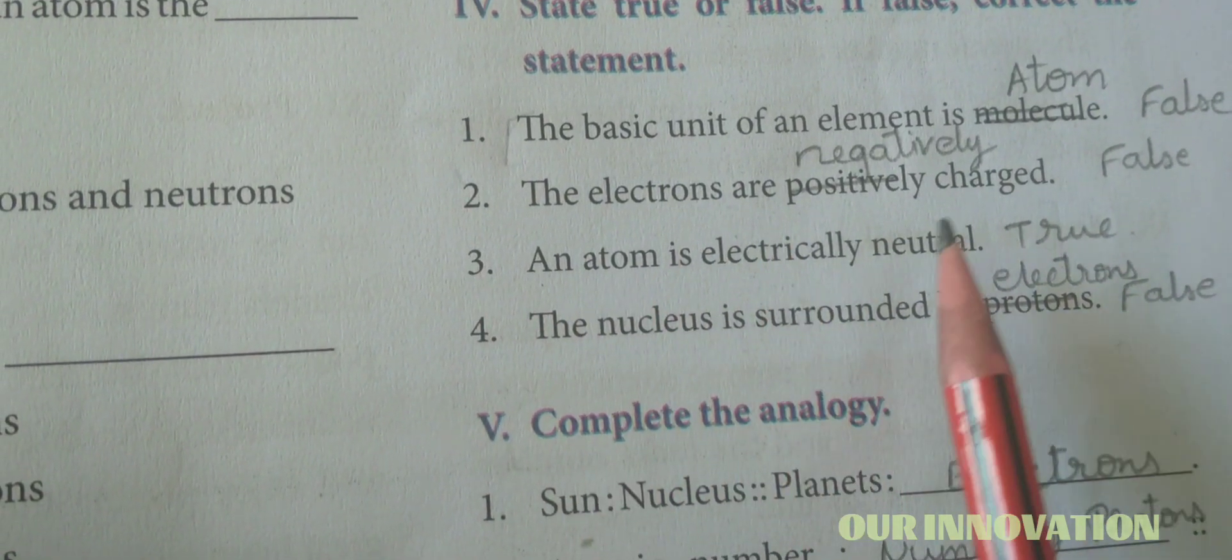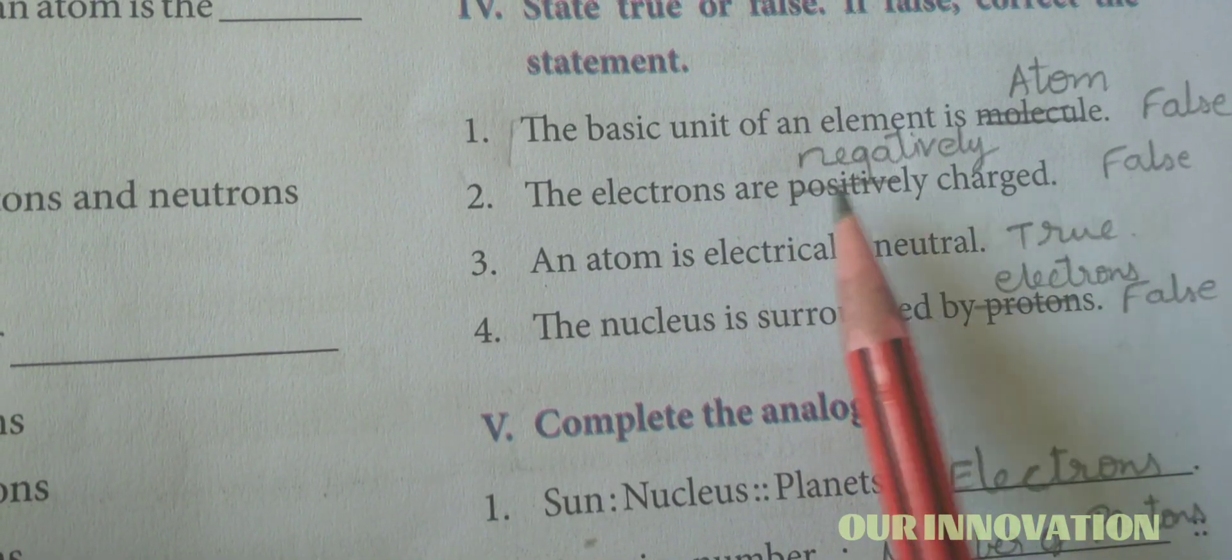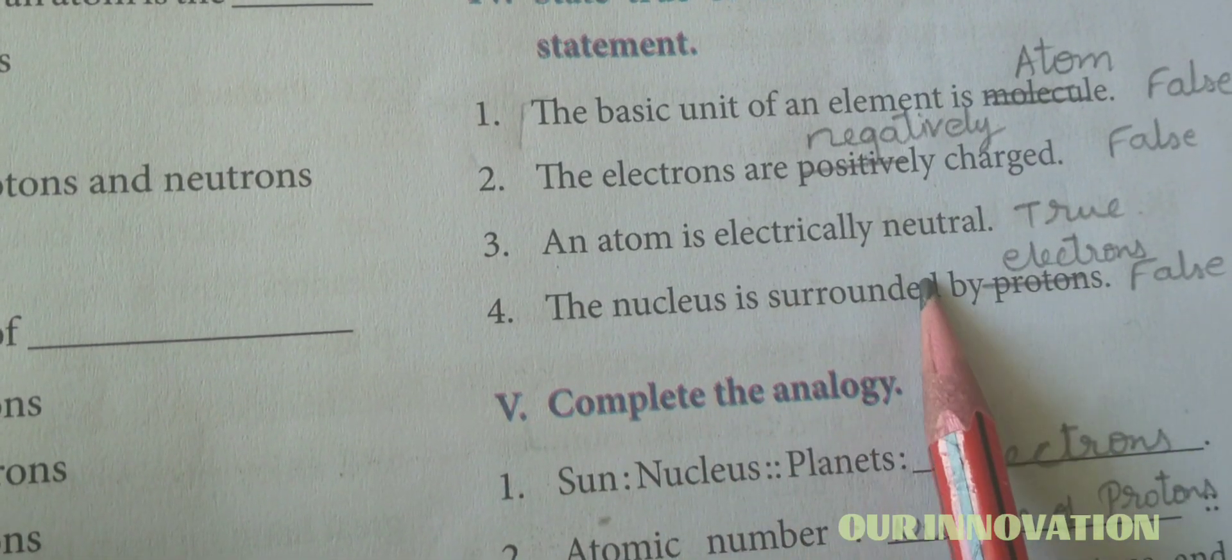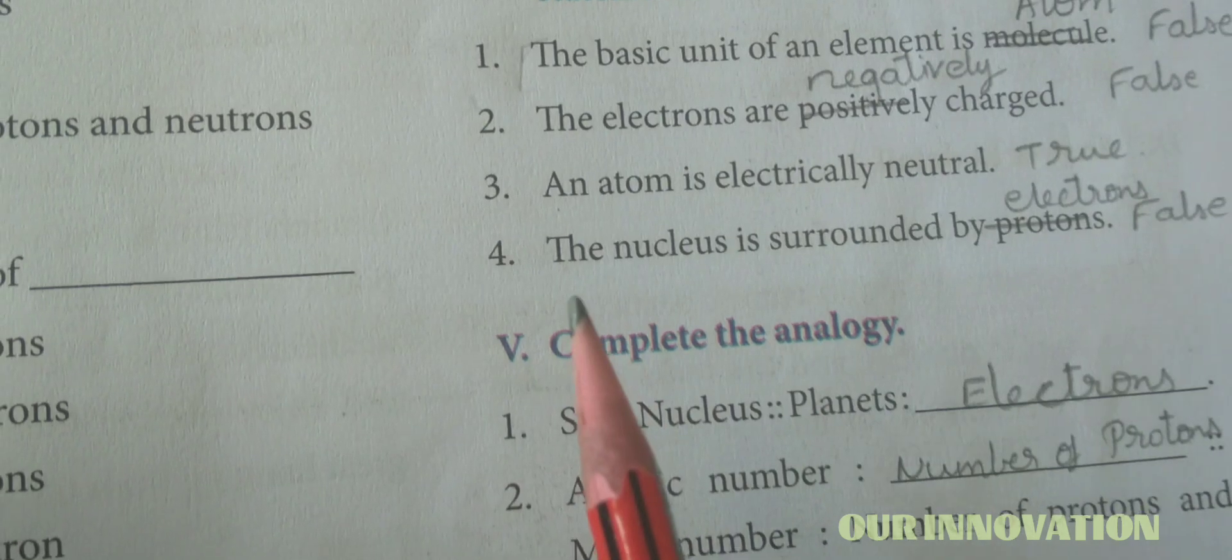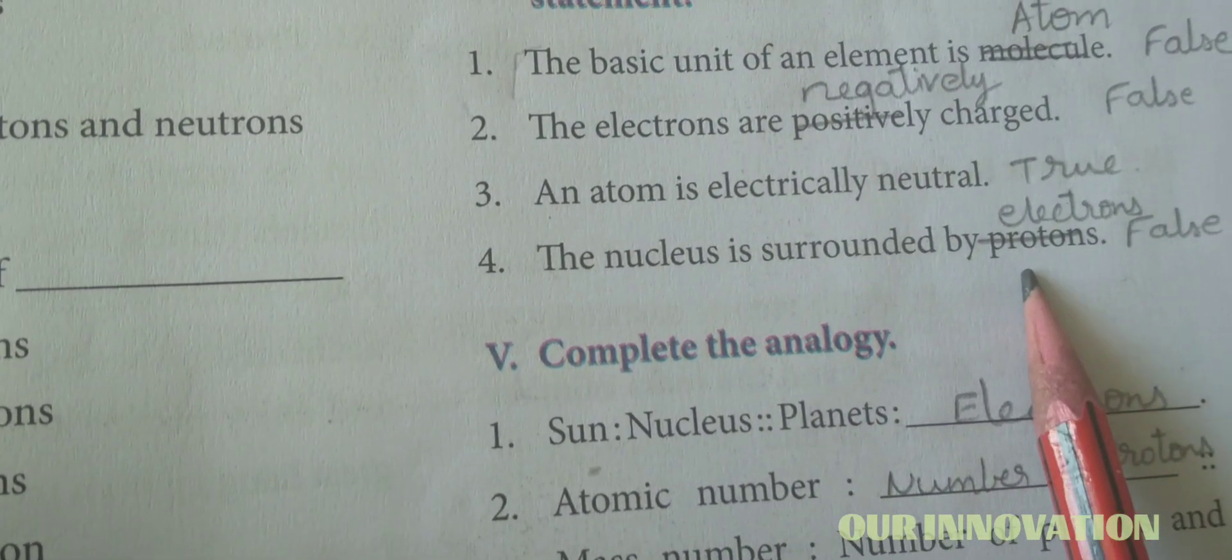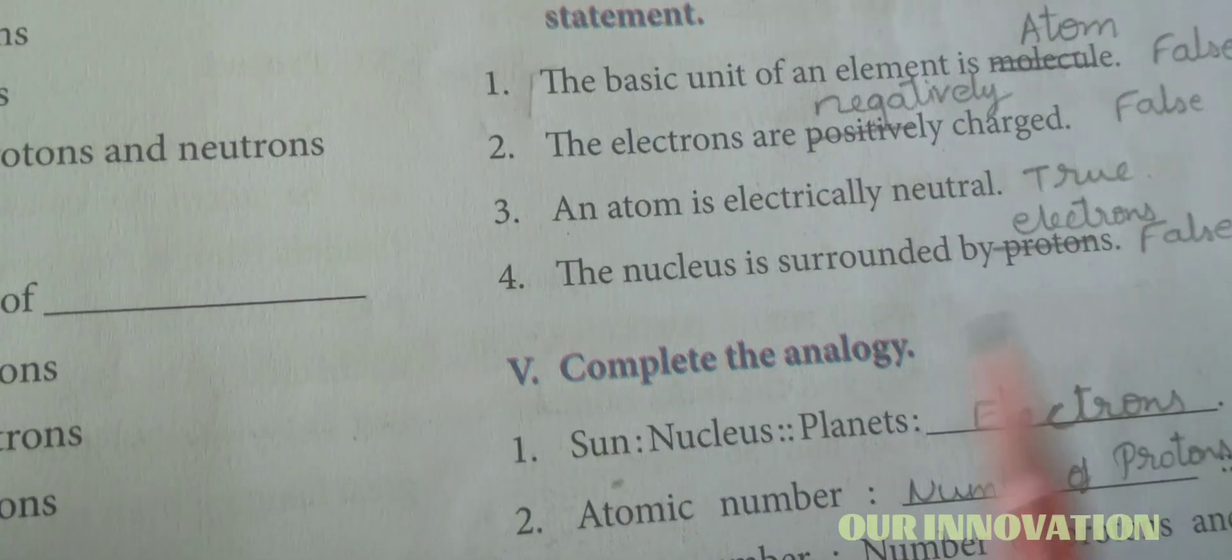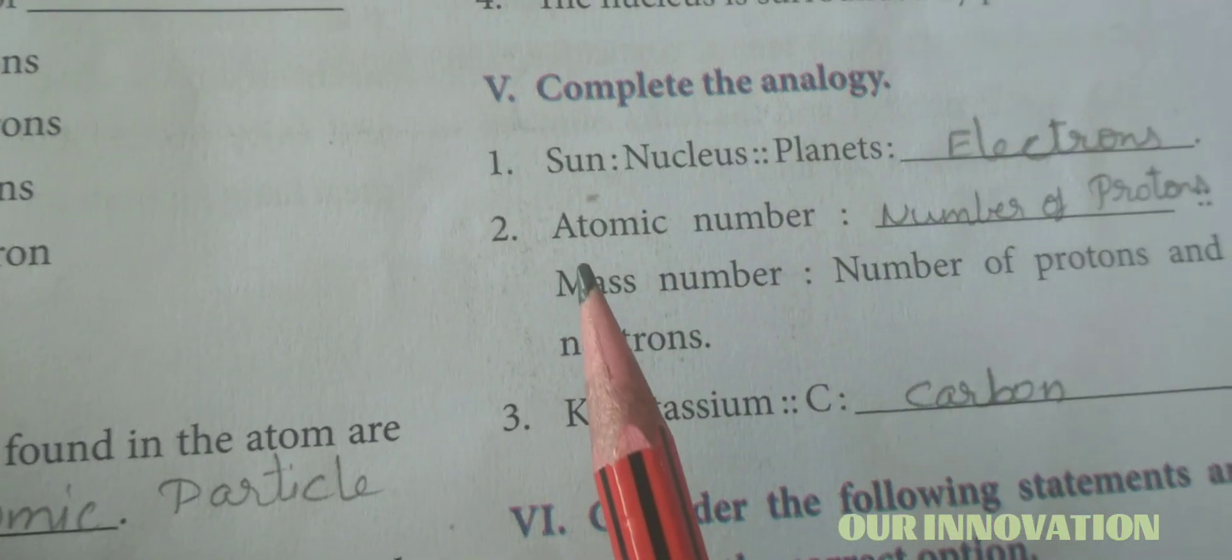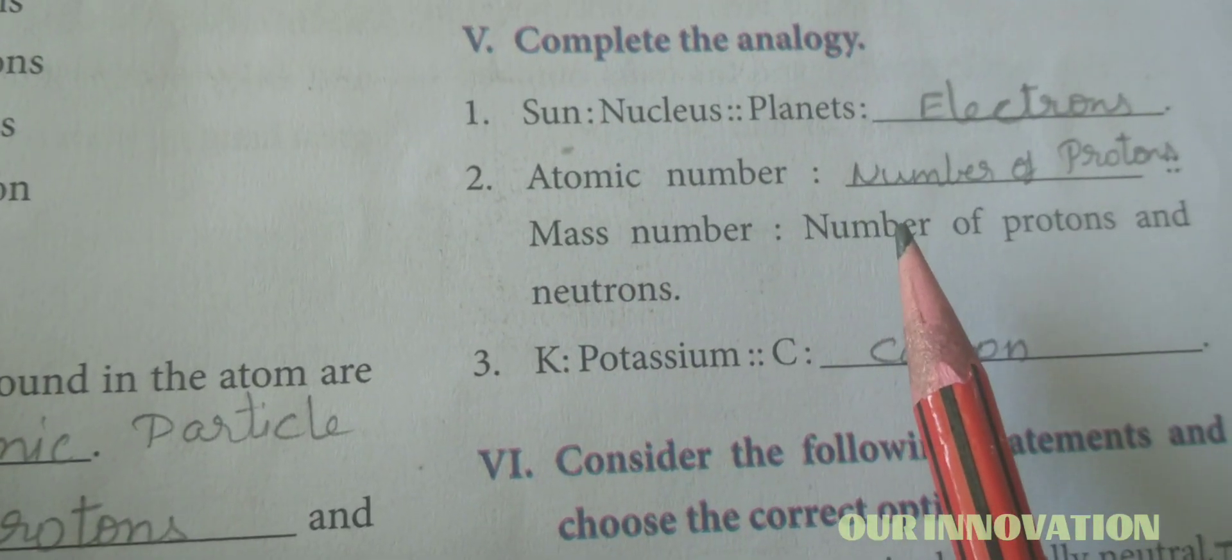The electrons are positively charged—no, electrons are negatively charged, false. An atom is electrically neutral—true. The nucleus is surrounded by protons—no, it is surrounded by electrons.